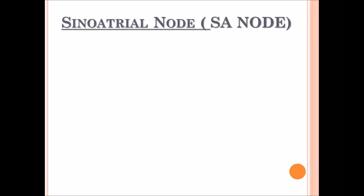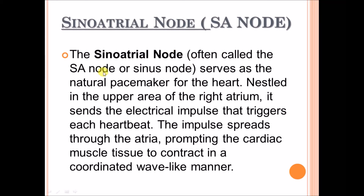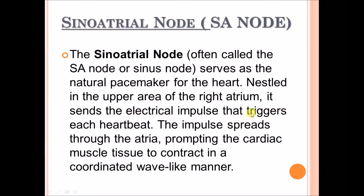What is the sinoatrial node, or SA node? The sinoatrial node, often called the SA node or sinus node, serves as the natural pacemaker of the heart. Nestled in the upper area of the right atrium, it sends electrical impulses that trigger each heartbeat. The impulse spreads through the atria, prompting the cardiac muscle tissue to contract in a coordinated wave-like manner.